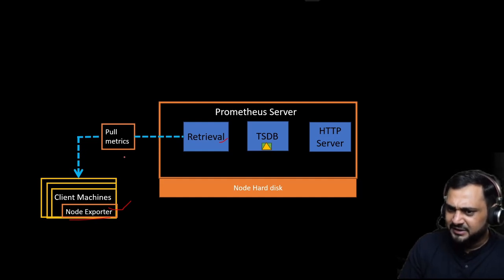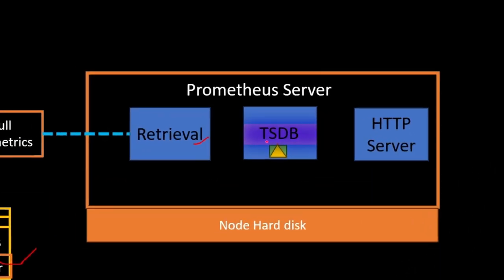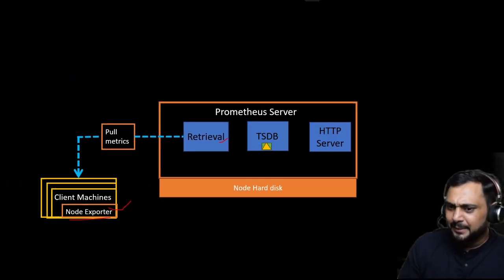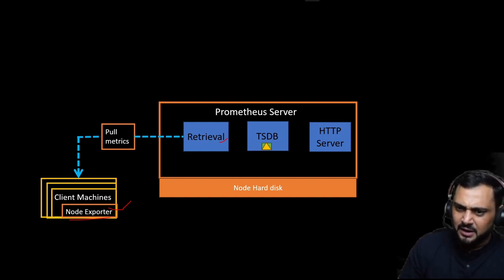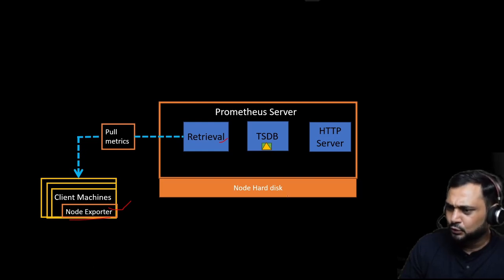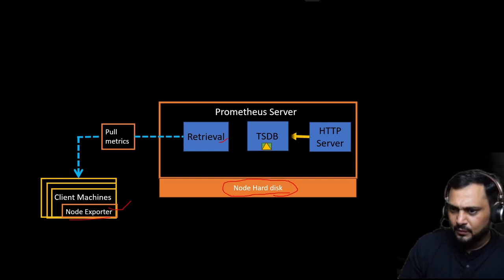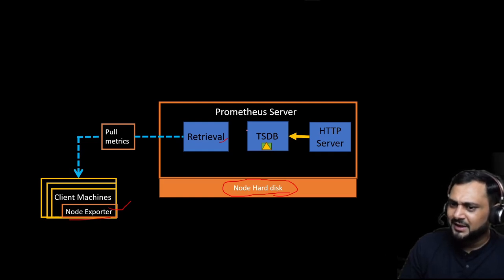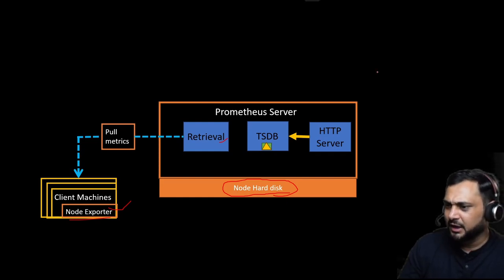Once the metrics are received by the retrieval component, they are stored in the time series database. We use a time series database because we have time series metrics. This database is generally stored on the server's local hard disk or a storage server. Prometheus also has a web portal where you can see graphs. This portal fetches the desired metrics from the time series database.